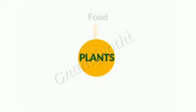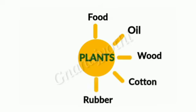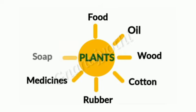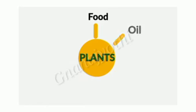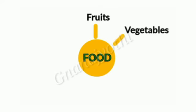Different parts of the plants are useful to obtain products from the plants, such as food, oil, wood, cotton, rubber, medicines, soap, paper, and more.